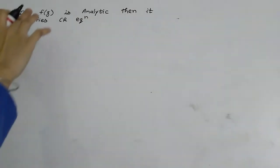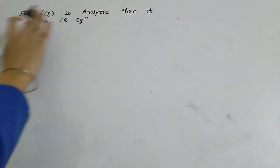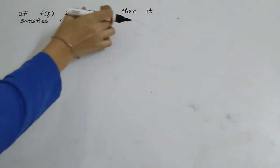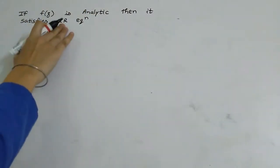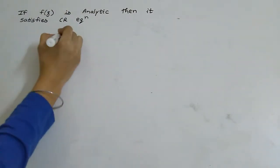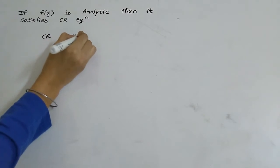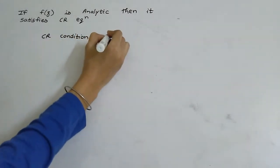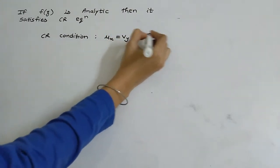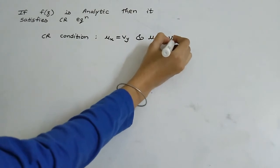Now let's see the necessary condition for an analytic function. If f(z) is analytic then it will satisfy the Cauchy-Riemann (CR) equations, which are: u_x = v_y and u_y = −v_x.